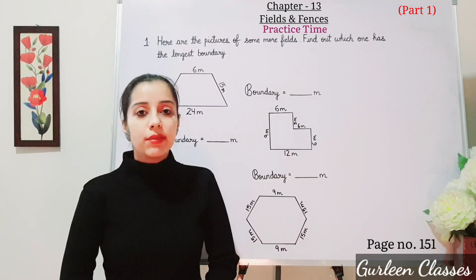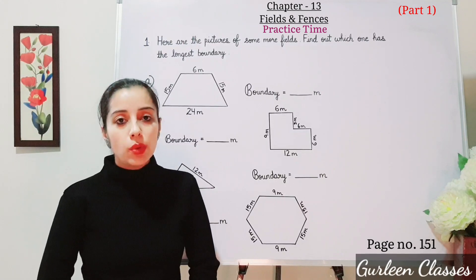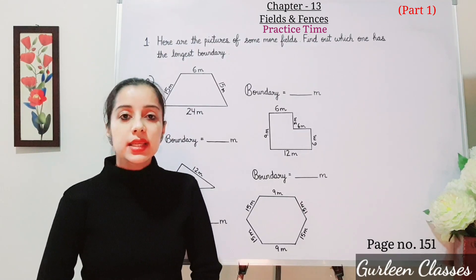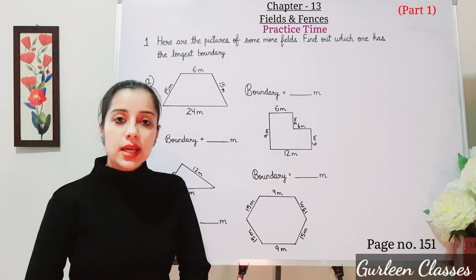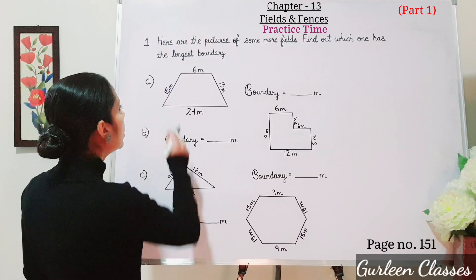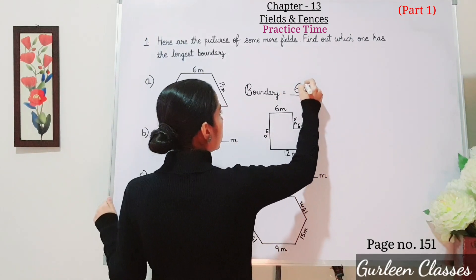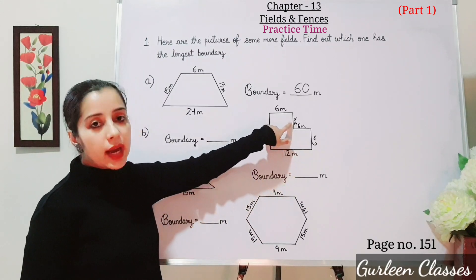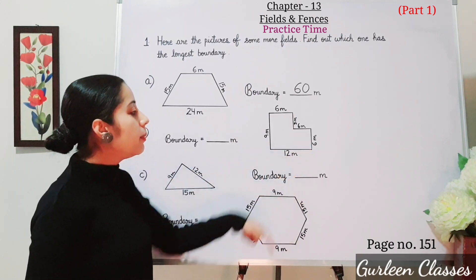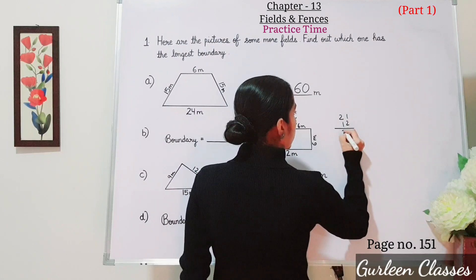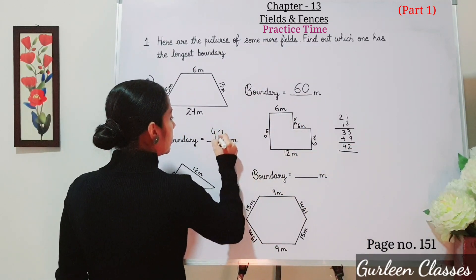Now let us start with practice time, page number 151. Here are pictures of some fields. Find out which one has the longest boundary — that is, the perimeter, the length of the boundary or outline. Just add all the sides. Part A: 15 plus 15 is 30, plus 6 is 36, plus 24 is 60 metres. Part B: 6 plus 3 is 9, plus 6 is 15, plus 6 is 21, plus 12 is 33, plus 9 is 42 metres. So the boundary for part B is 42 metres.